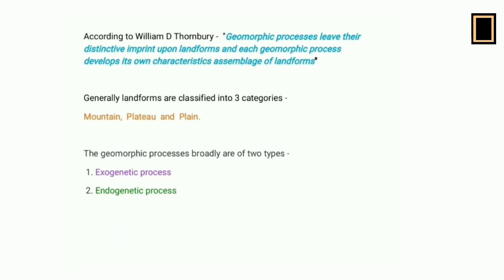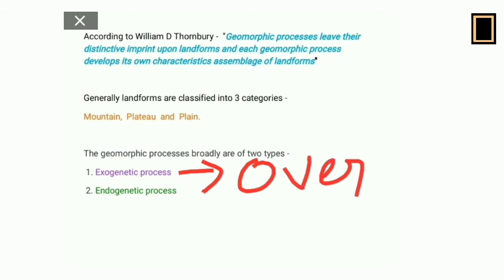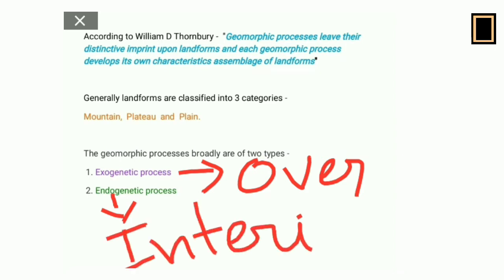There are two types of geomorphic processes: one is the exogenetic forces, another is the endogenetic forces. Exogenetic forces are processes where the energy is confined over the earth's surface, while in endogenetic forces the energy always comes from the earth's interior. That is the basic difference between the two.